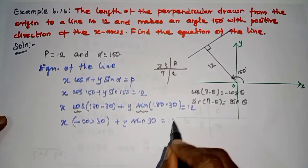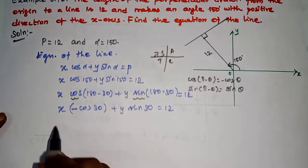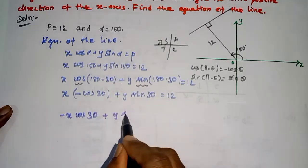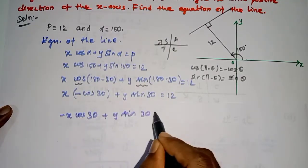This is equal to 12. Next, minus x cos 30 degrees plus y sin 30 degrees is equal to 12.